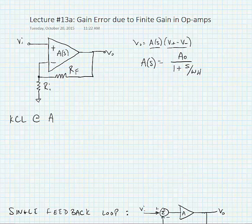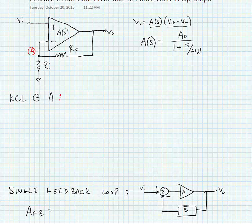Now if we do KCL at node A, which is the inverting input terminal to the op-amp, we can find the following.